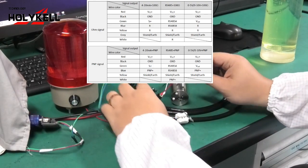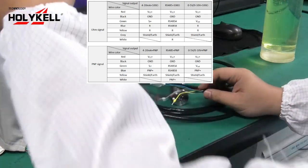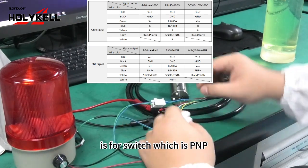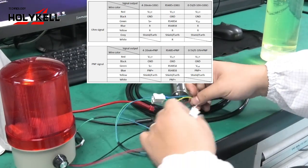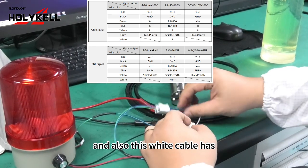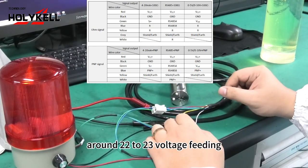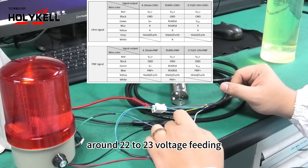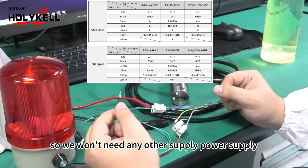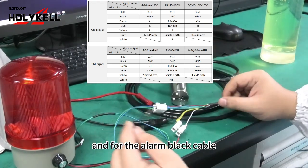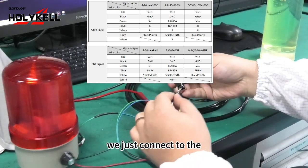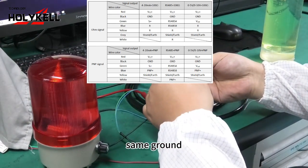The white cable is for the switch, which is PNP. This white cable has around 22 to 23-volt feeding, so we won't need any other power supply. For the alarm black cable, we just connect to the same ground.